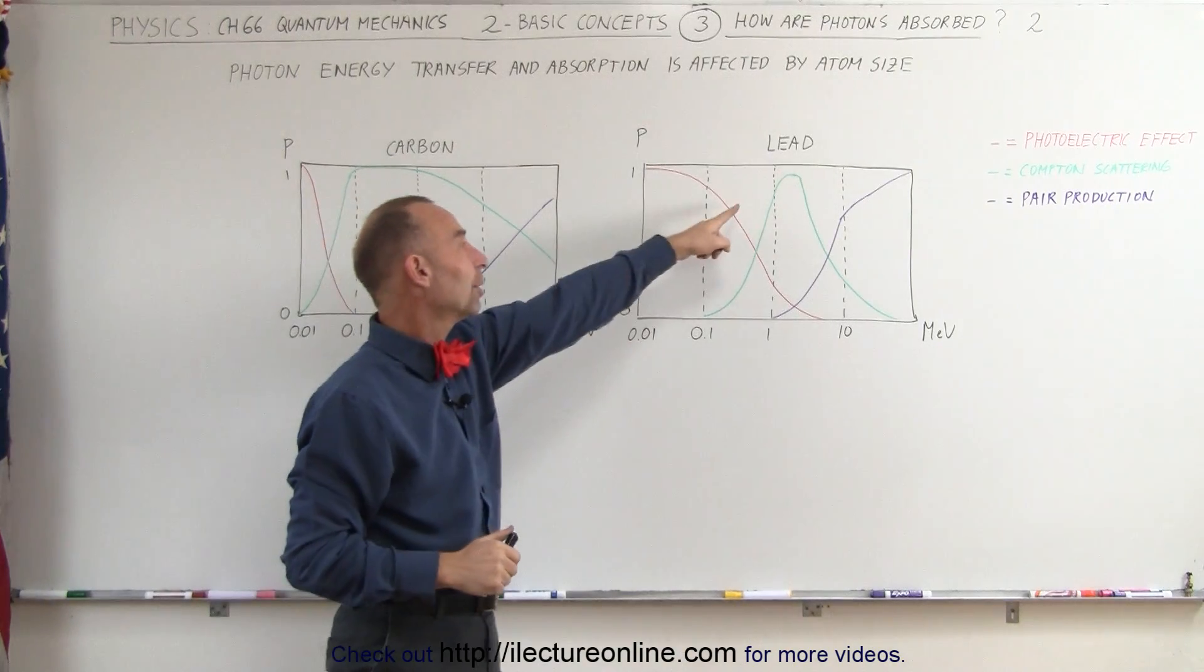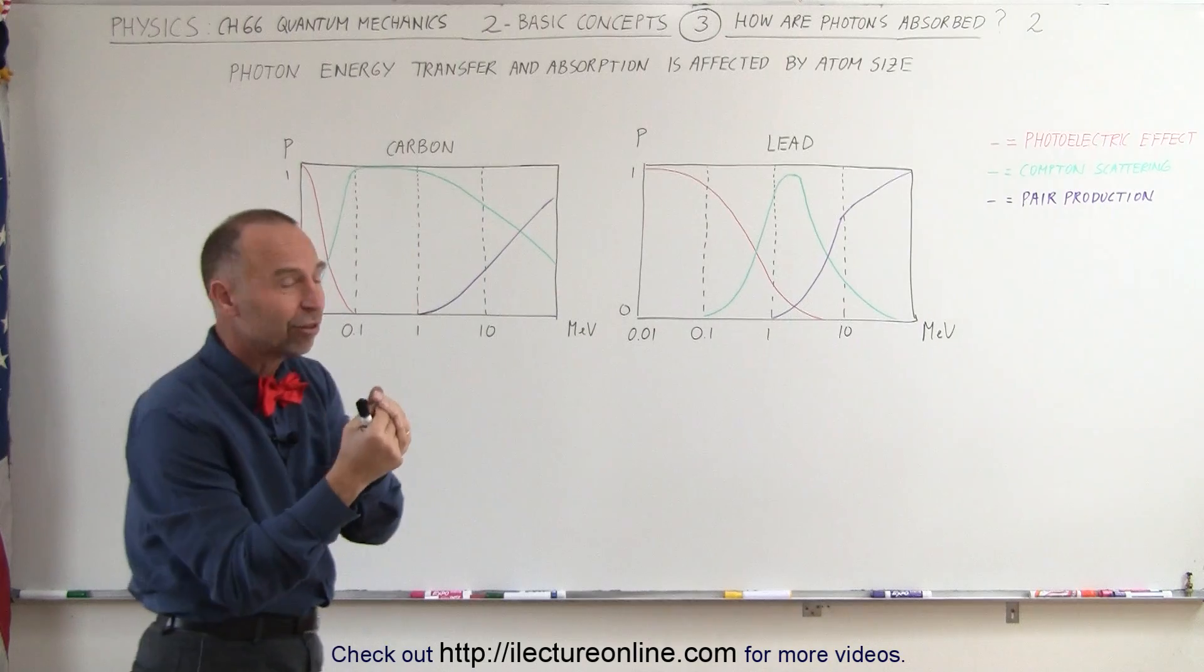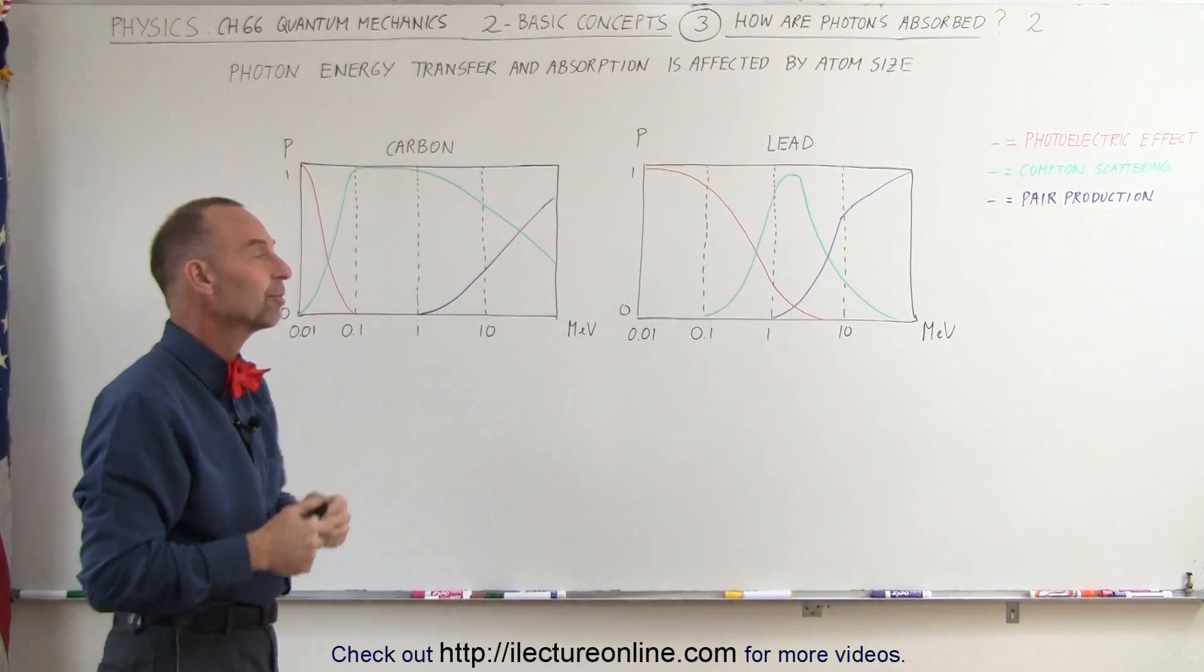Lead has an atomic number of 82, there's 82 electrons to be set free and the ones that are very close to the nucleus take an enormous amount of energy.